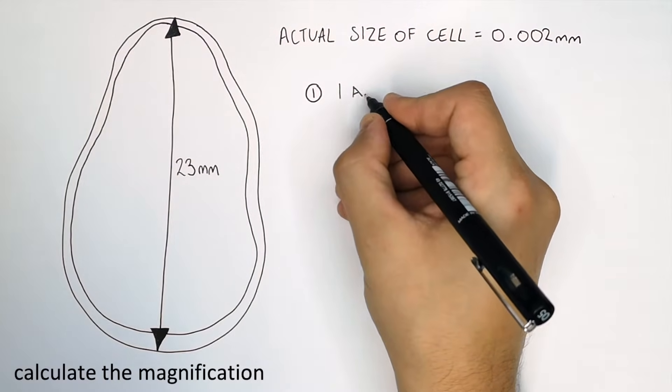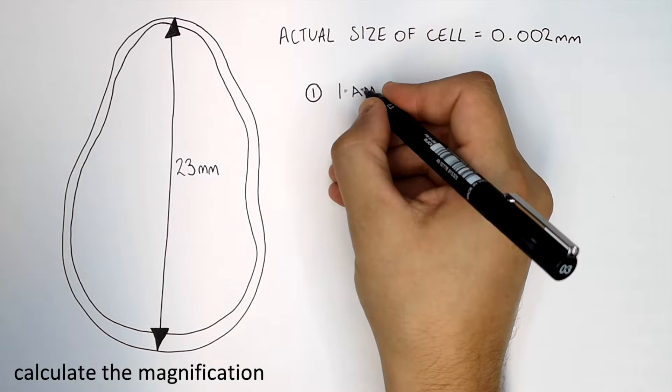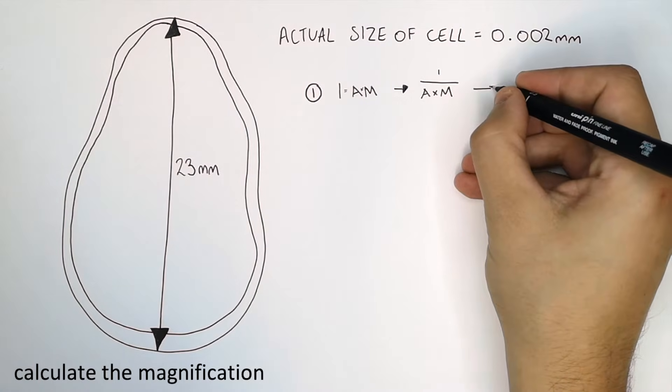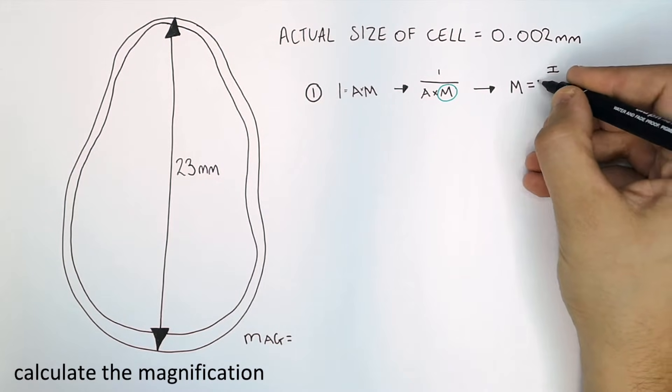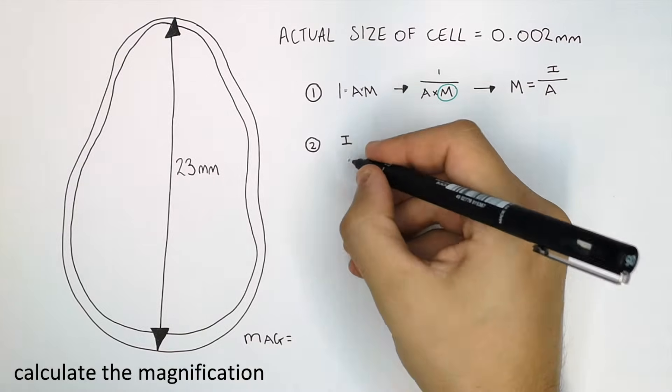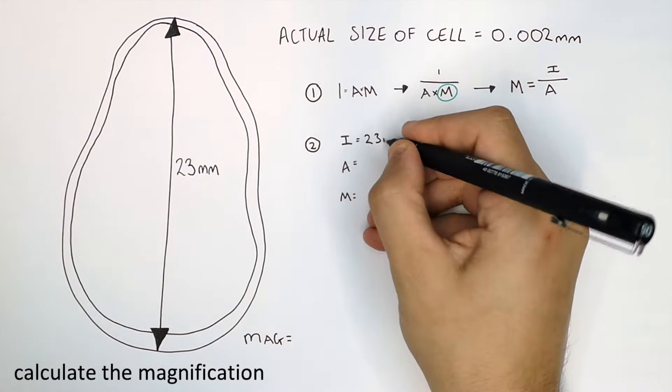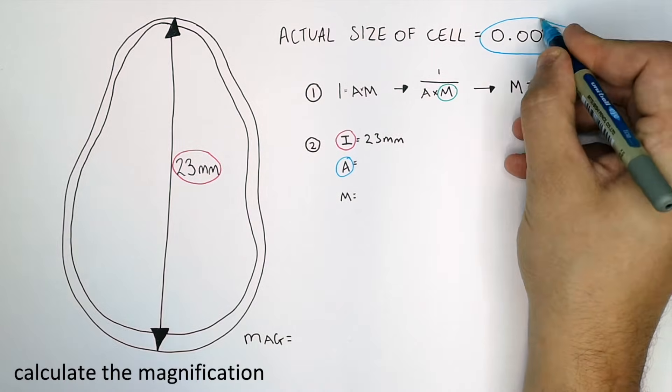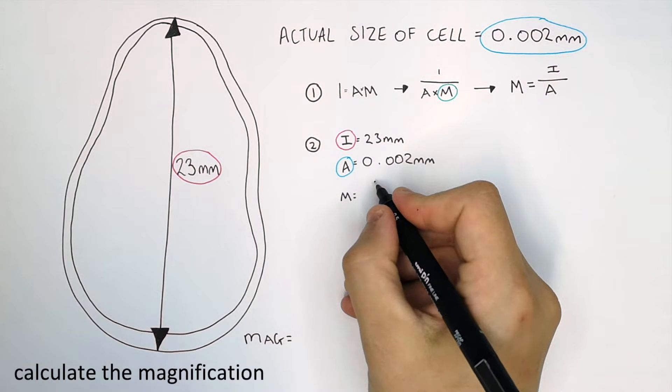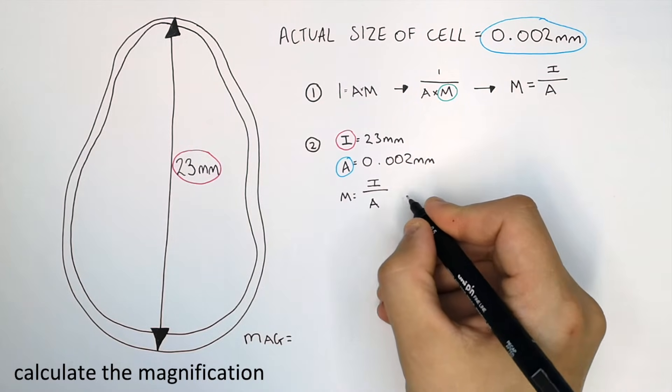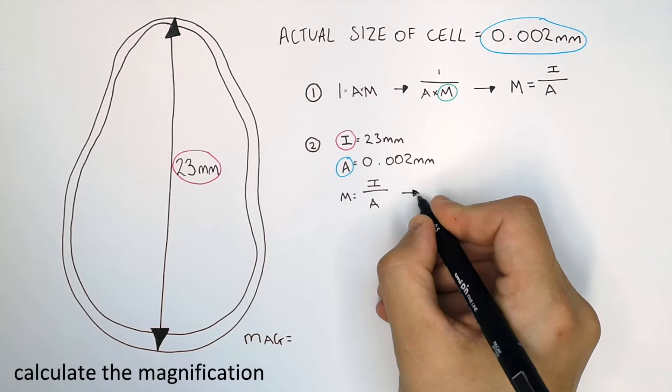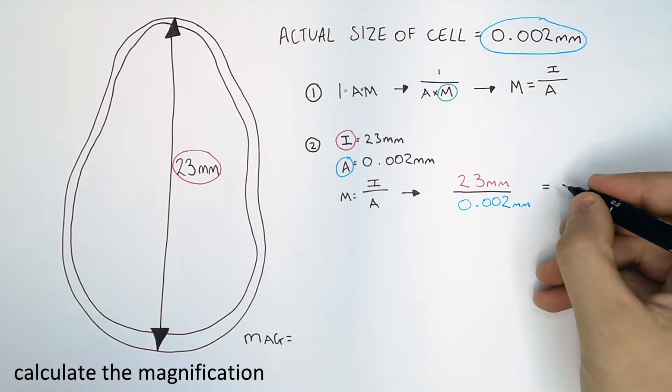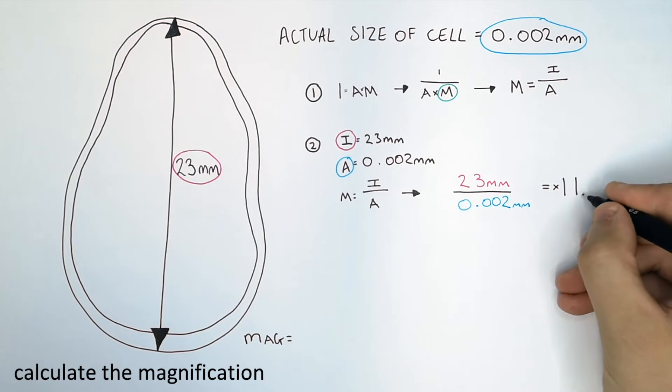First thing you must always do is write I, A, M. Put equals between the I and the A and times between the A and the M. That gives you the triangle. We're trying to figure out magnification, so M equals I divided by A. We've got 23 millimeters for the image size and 0.002 millimeters for the actual size. So 23 millimeters divided by 0.002 millimeters gives you a magnification of 11,500.